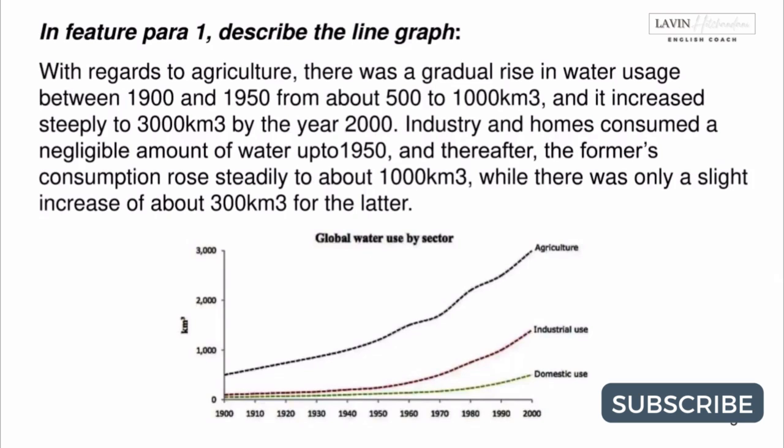In Feature Para 1, describe the line graph. With regards to agriculture, there was a gradual rise in water usage between 1900 and 1950, from about 500 to 1000 cubic kilometers, and it increased steeply to 3000 cubic kilometers by the year 2000. Industry and homes consumed a negligible amount of water up to 1950, and thereafter the former's consumption rose steadily to about 1000 cubic kilometers, while there was only a slight increase of about 300 cubic kilometers for the latter.